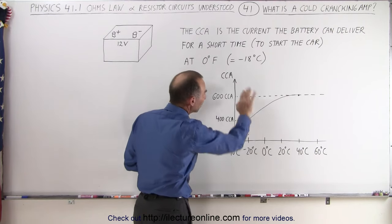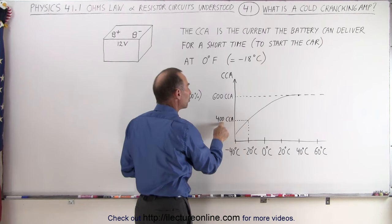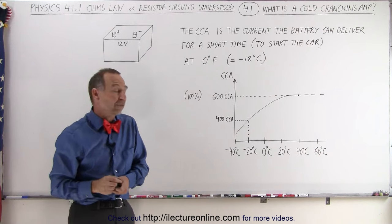So at about minus 20, close to about minus 18 degrees Celsius, what will be the current produced by the battery? This will then be considered the cold cranking amps.